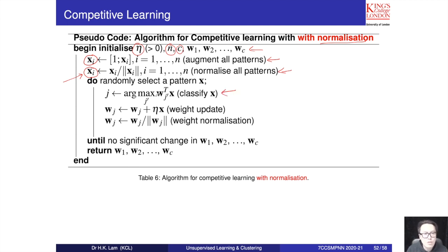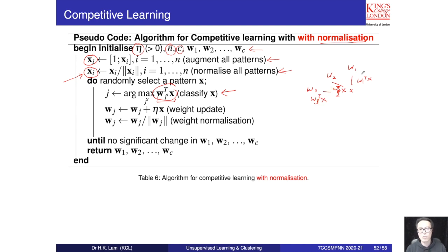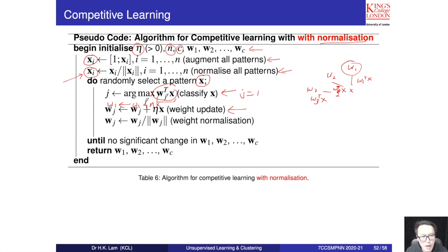From this point, all x refers to the augmented normalized sample. We compute w1 transpose times x, w2 transpose times x, and w3 transpose times x, then pick the one giving the maximum value. For example, if w1 gives the maximum, then j equals 1 and we are talking about w1.